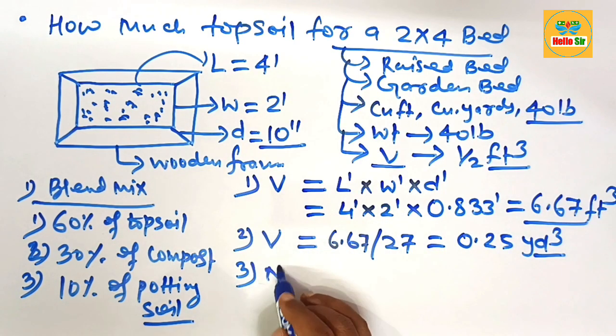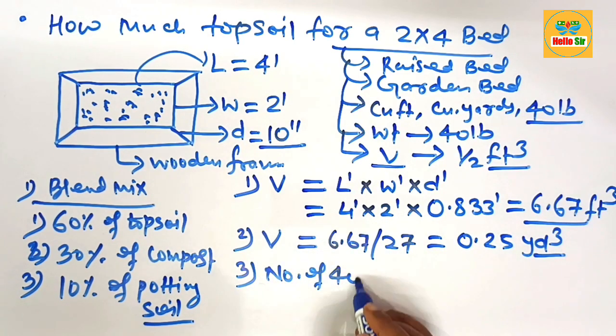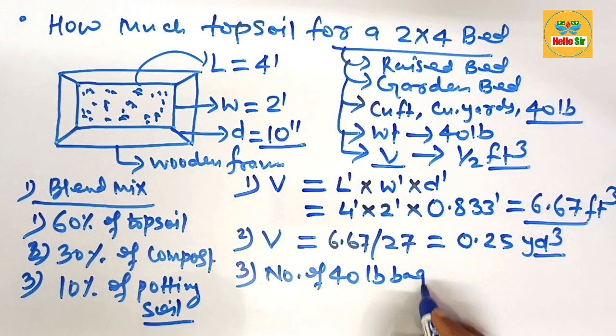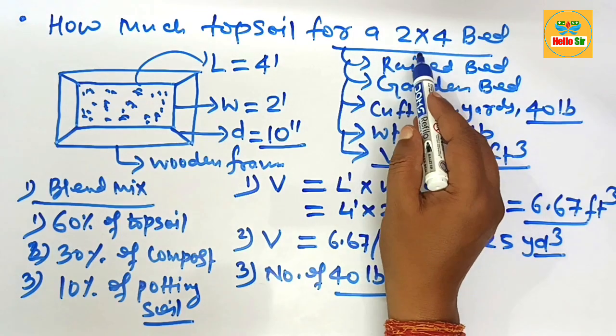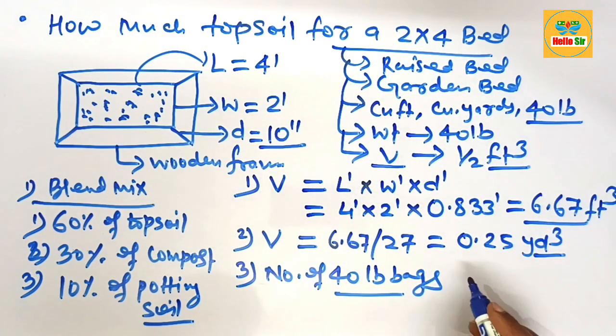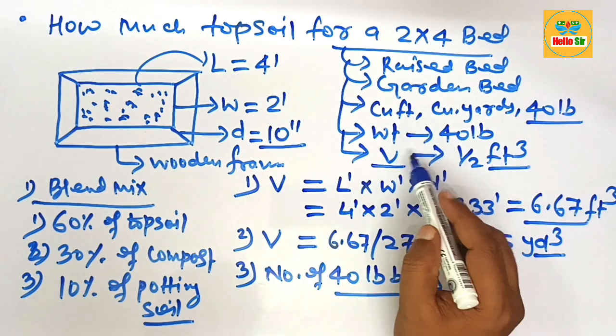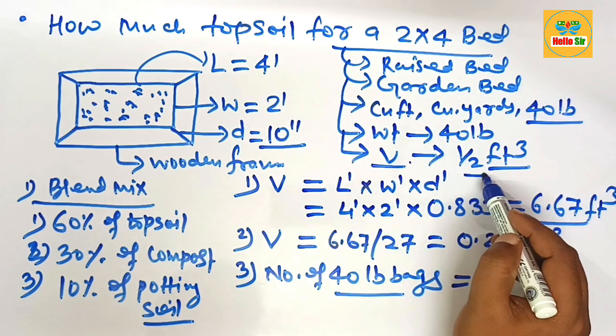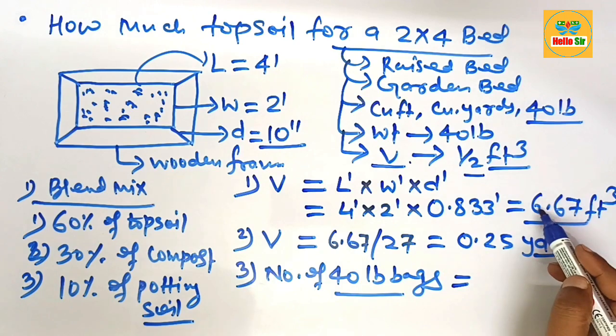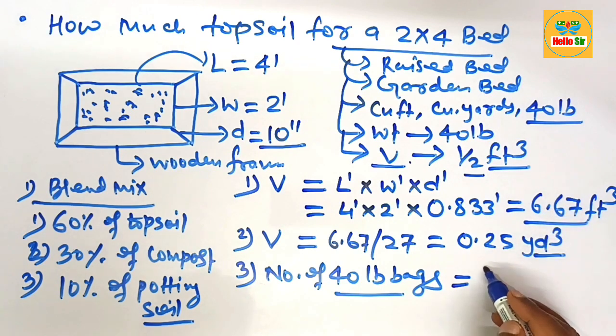If you want to calculate the number of 40 pound bags—how many 40 pound bags of topsoil do I need for creating a 2 by 4 garden bed? You know that the volume of each bag of topsoil is about 0.5 cubic feet and you have a total of 6.67 cubic feet.